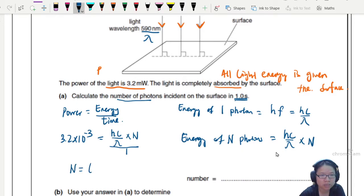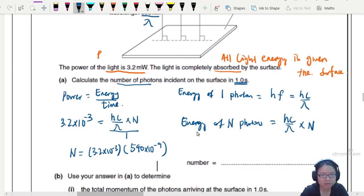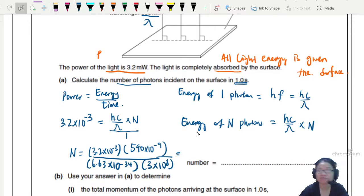Hc over lambda times N. Because the time is 1 second, I divide by 1. So I guess now we can find N. N would be 3.2 times 10 to the power of negative 3 multiplied by lambda which is 590 nanometer, over 1. So lambda bring up to multiply and then H and C bring over to divide.